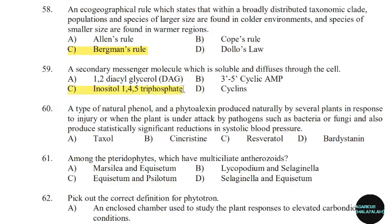60th question: A type of natural phenol and a phytoalexin produced naturally by several plants in response to injury, or when the plant is attacked by pathogens such as bacteria or fungi, and also shown to produce a statistically significant reduction in systolic blood pressure. Correct answer: Option C.